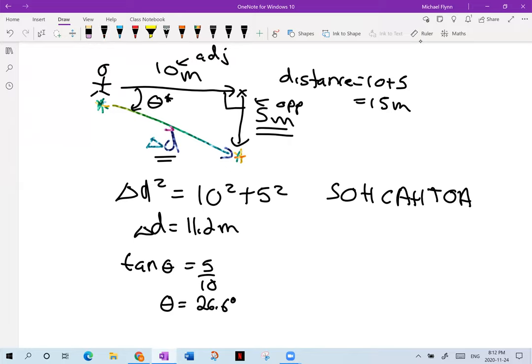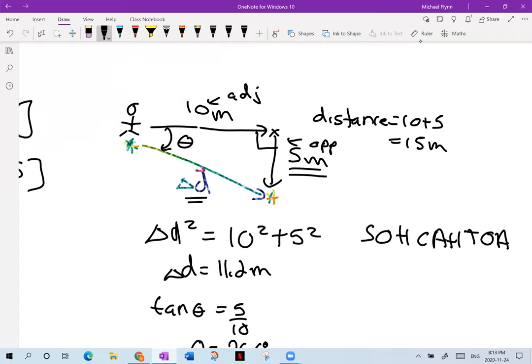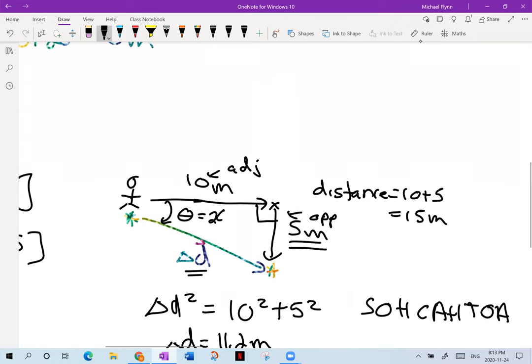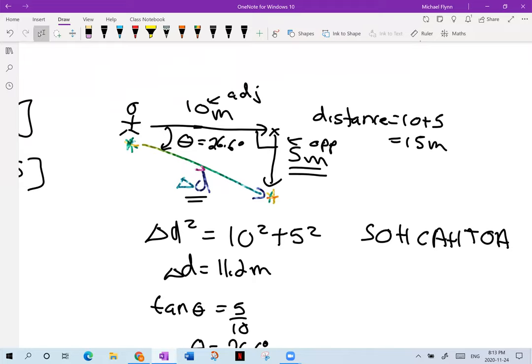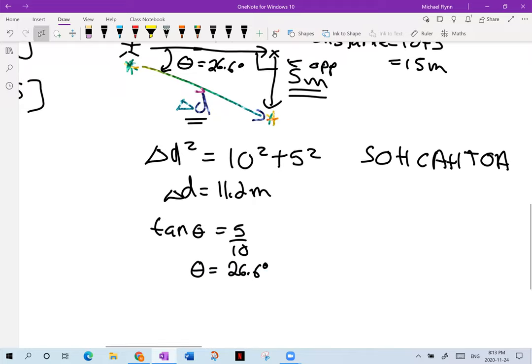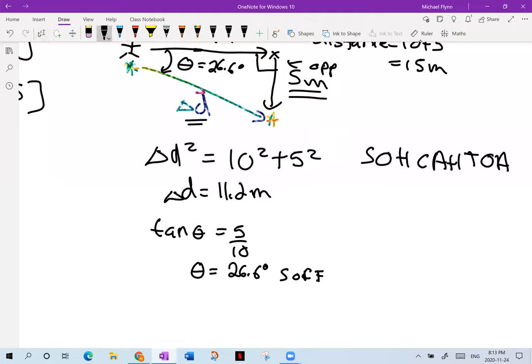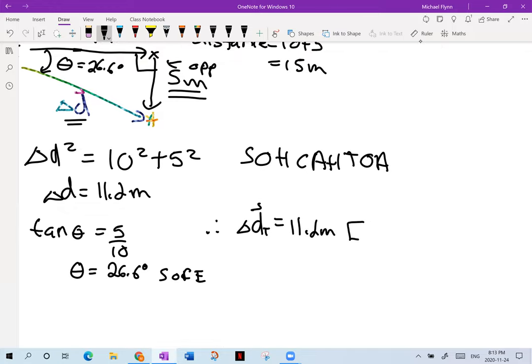So here we found that this is 26.6 degrees. And it is 26.6 degrees south measured from the east line. So what we say is south of east. So now I'm going to write, therefore, my total displacement equals 11.2 meters. And then I'll put it in the direction of 26.6 degrees south of the east line.